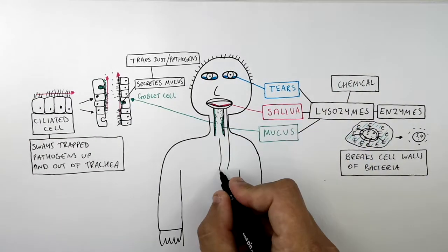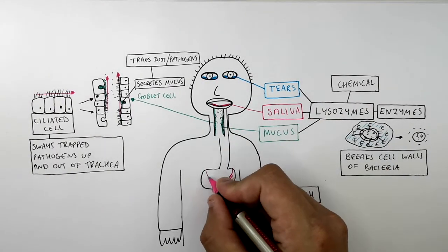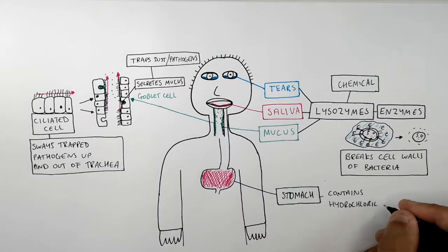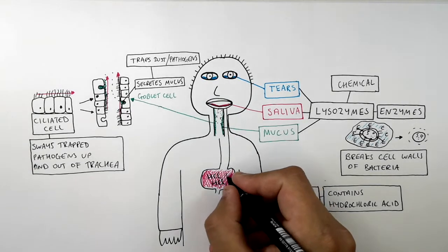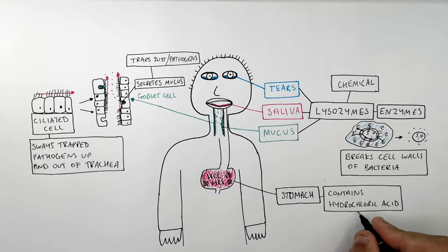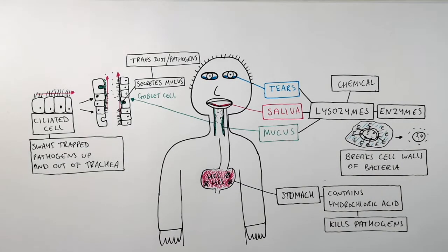Inside the stomach is an acid called hydrochloric acid. What the hydrochloric acid — HCl — does is kill pathogens. So if you were to ingest pathogens such as bacteria, the hydrochloric acid will kill the bacteria. The hydrochloric acid in the stomach acts to kill pathogens — it is a chemical defence.